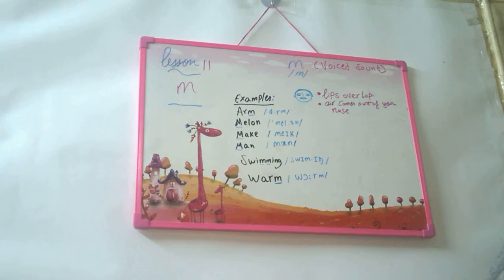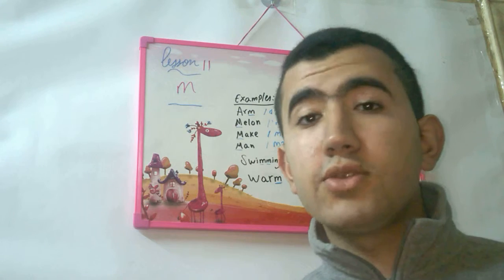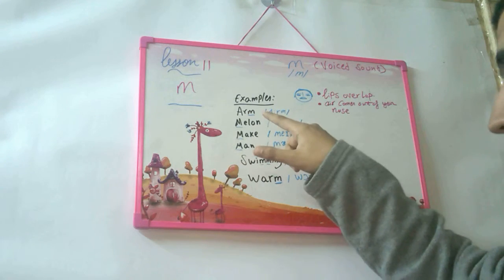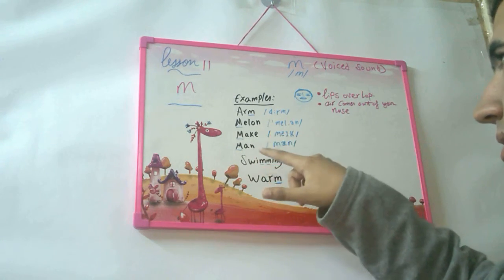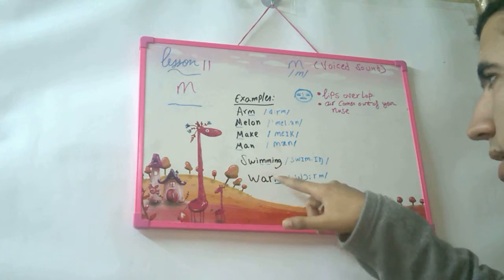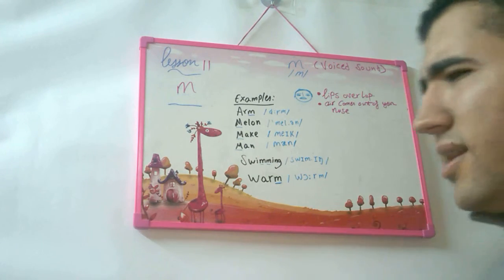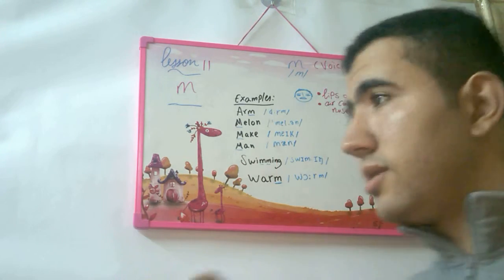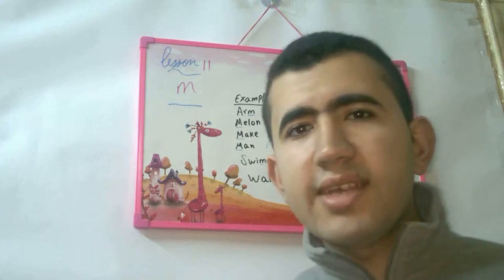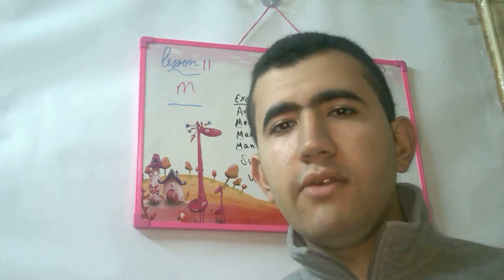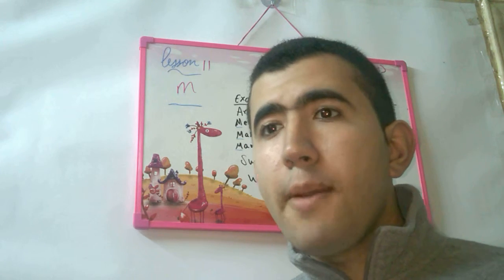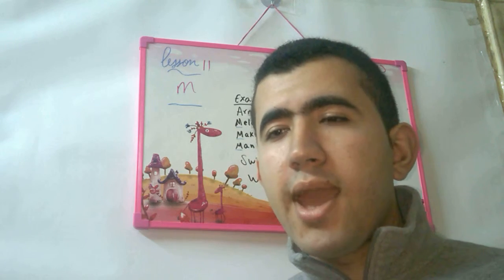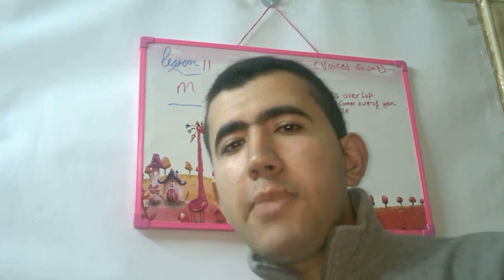So pronounce with me these things again and let's see how we apply this rule. Arm, melon, make, man, swimming, and warm. It's very important to see this word — swimming. Swimming has the two positions of M: at the beginning like 'swim,' and in the middle like 'ming.' Swimming.